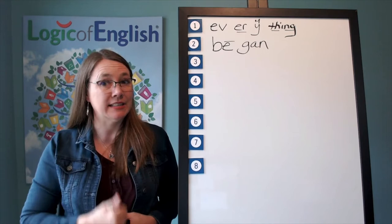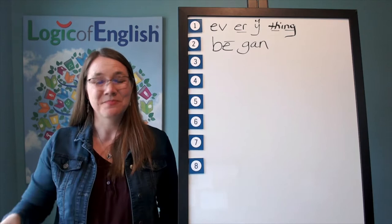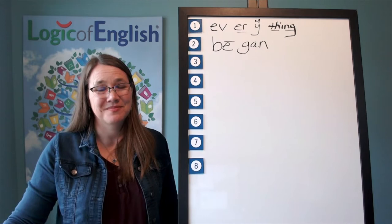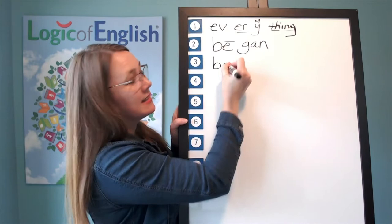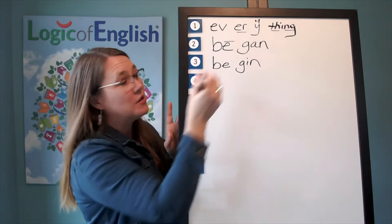The second syllable is gin. Go ahead and write begin. Sound it out as you write it. Good. And now help me to write it. The first syllable is B, B-E. The second syllable is gin, G-I-N.